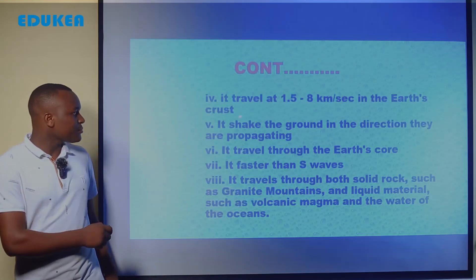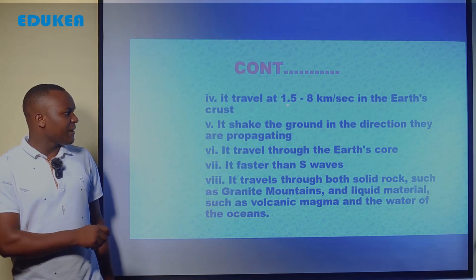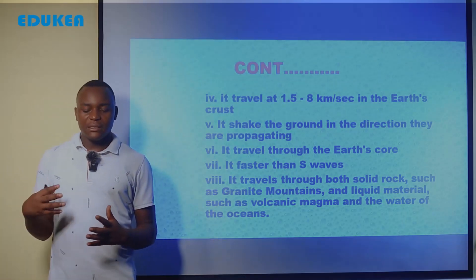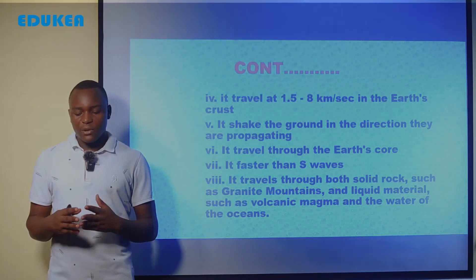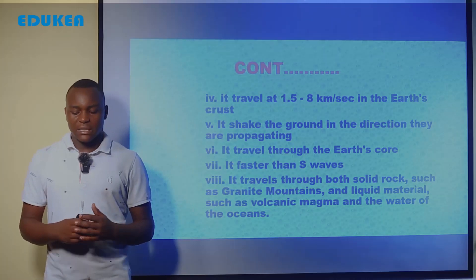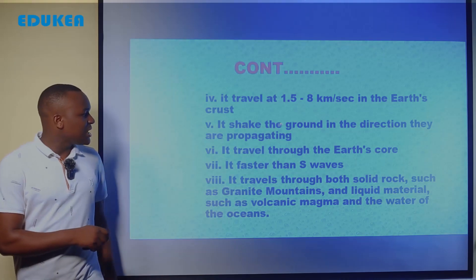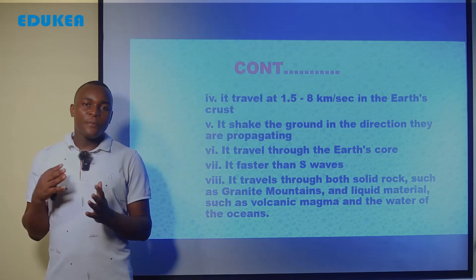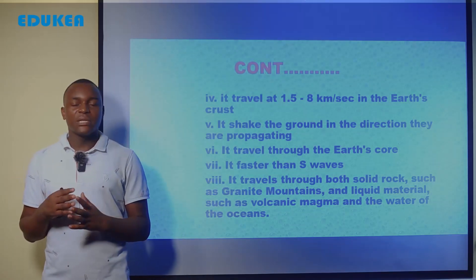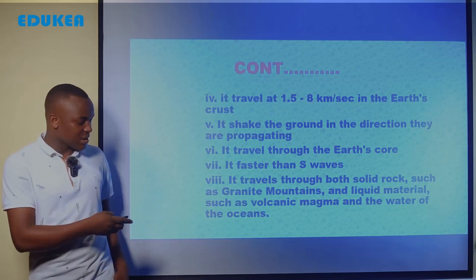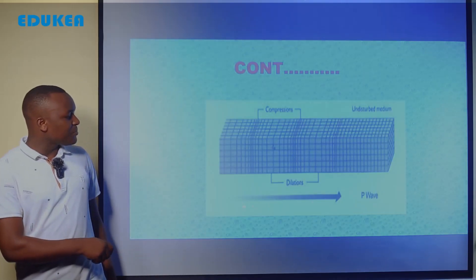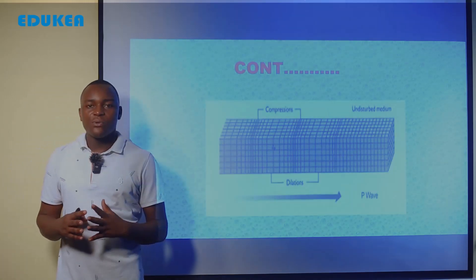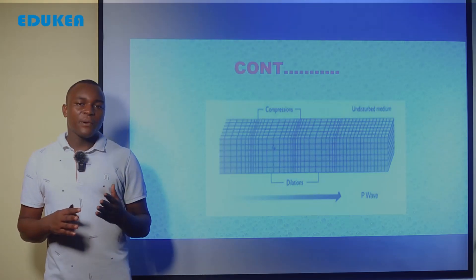Primary waves travel at 1.5 to 8 km per second in the Earth's crust. They also shake the ground in the direction in which they are propagating — so if they propagate to the right, the ground will shake along the right direction.